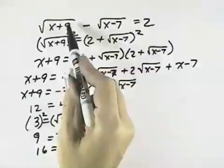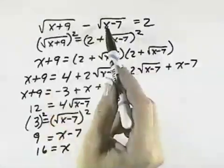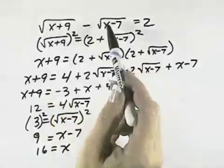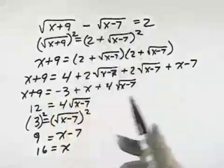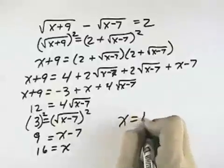So 16 plus 9 is 25, the square root is 5, minus 16 minus 7 is 9, the square root is 3. So 5 minus 3 is 2. It does work. So x equals 16, or the solution set is the value 16.